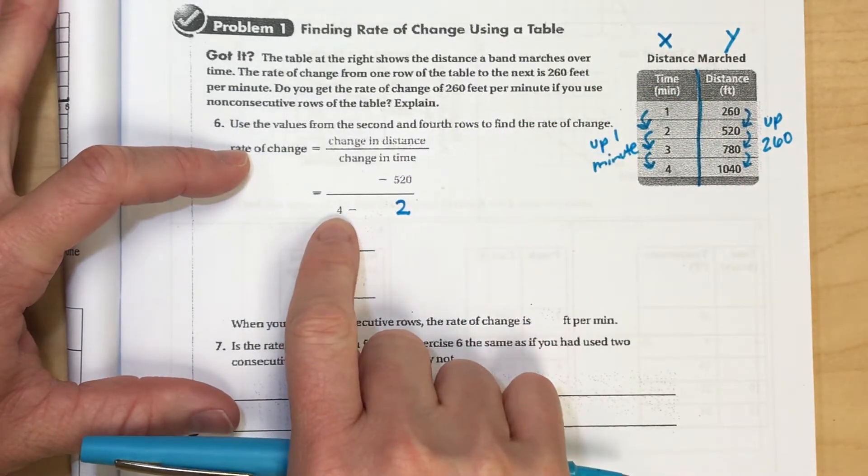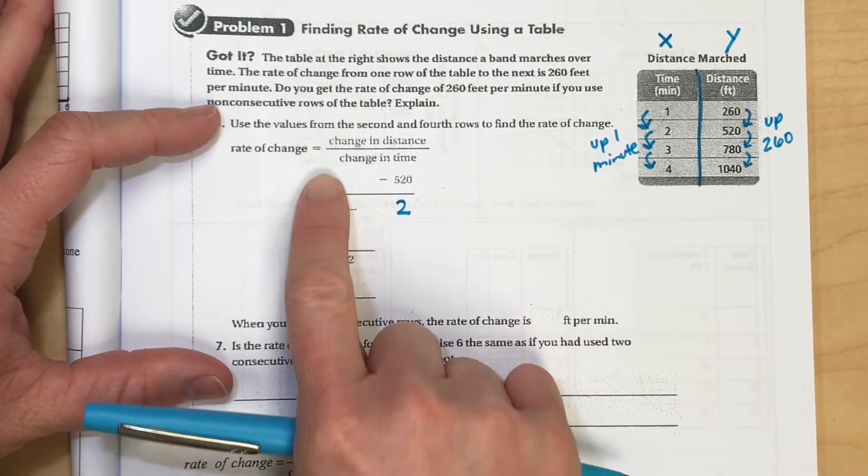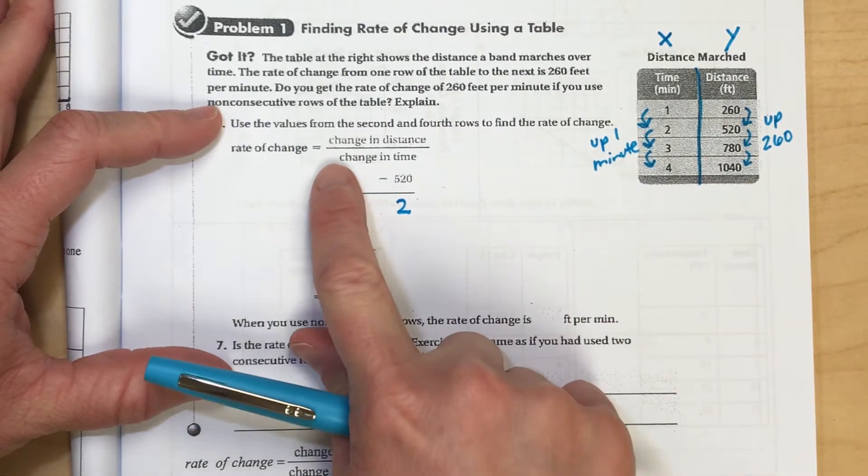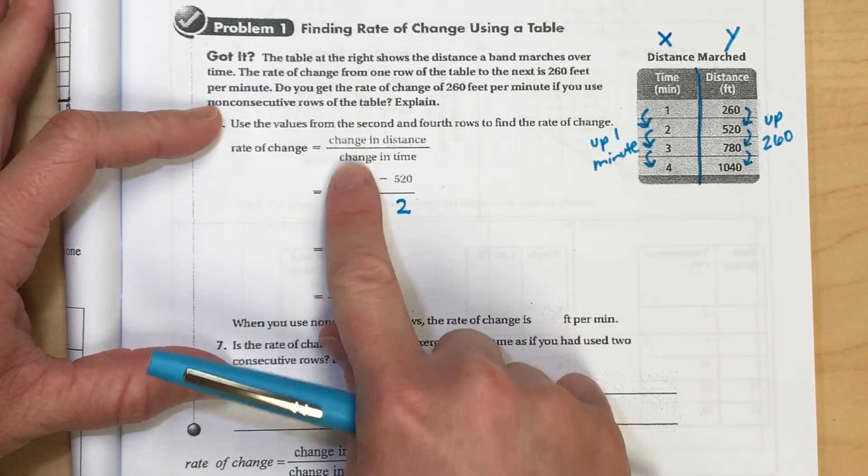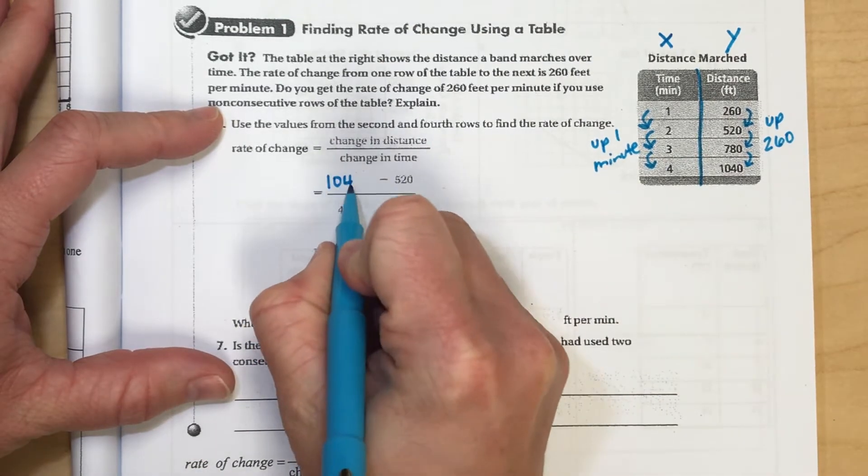So that has to be one of the points on your table, 2, 520 here. Now what point or what y value goes with an x value of four? Four comma what? That point is four comma 1040. And so this needs to be a point on your slope formula. And so 1040 goes here.